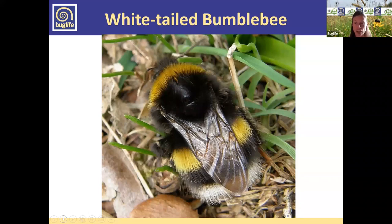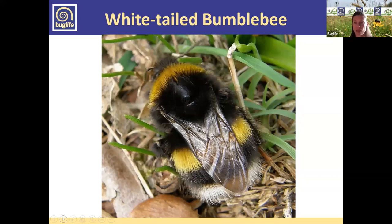Our next species is the white-tailed bumblebee — the queen has a very similar shape and pattern to our buff-tailed bumblebee, but the yellow bands are much more lemony yellow rather than an orangey yellow, and she has a lovely snowy white tail — always a really clean white tail, compared to the buff-tail of our buff-tailed bumblebee.